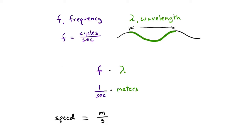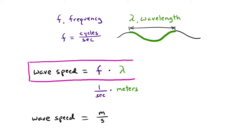What you're getting here is the speed of the wave, which is how fast it moves. So we find the speed of a wave equals its frequency times its wavelength.